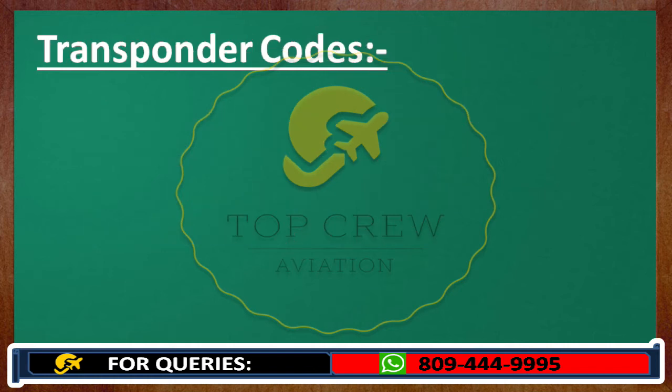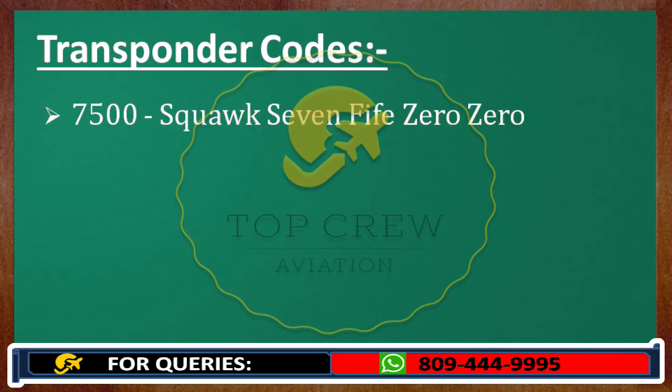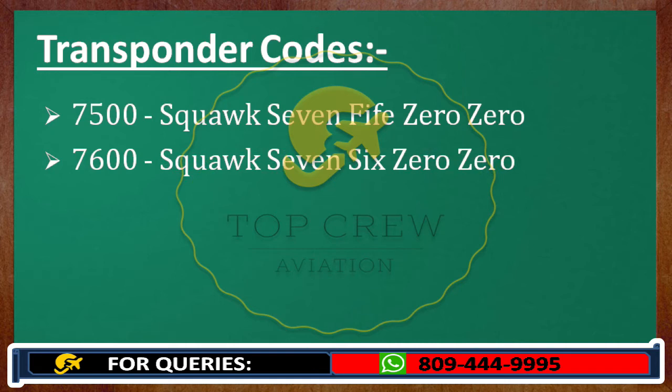Now transponder codes. 7500 — we would transmit it as squawk 7500. If it is written like this, squawk 7600.